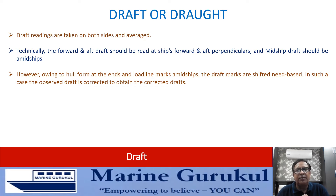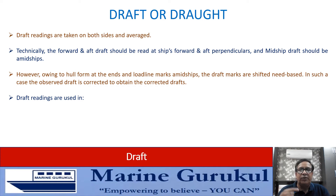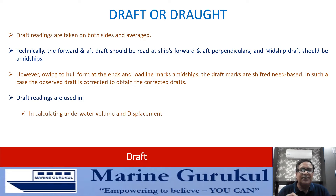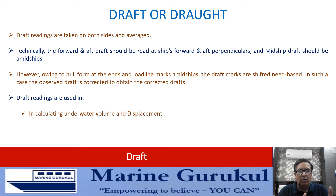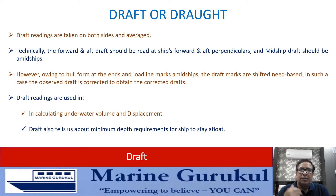These corrections are given in tables in the stability booklet, or they can be calculated by ratio and proportion method, which we will learn during the draft survey. The draft readings are used to enter the hydrostatic tables and obtain the hydrostatic particulars of the ship including the displacement. Draft is also important because it tells us the minimum depth of water required for the ship to remain afloat and to prevent it from running aground.